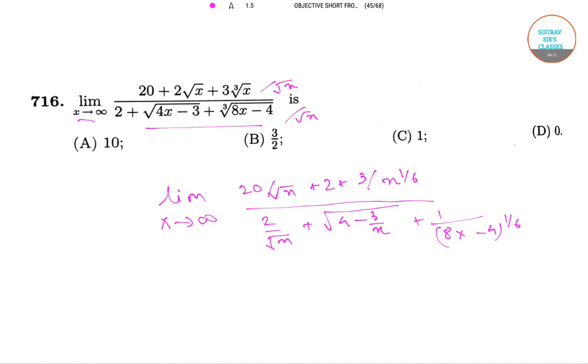When x tends to infinity, this gives the value as 2 divided by root 4, which equals 1. So option number C is correct.